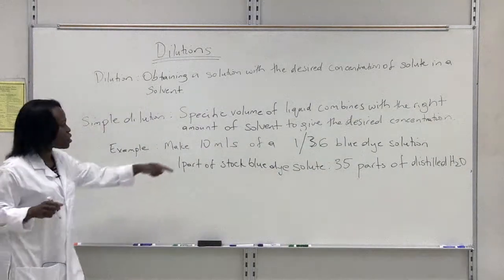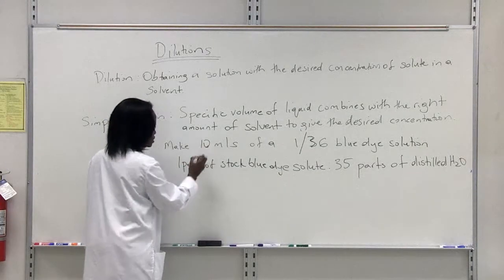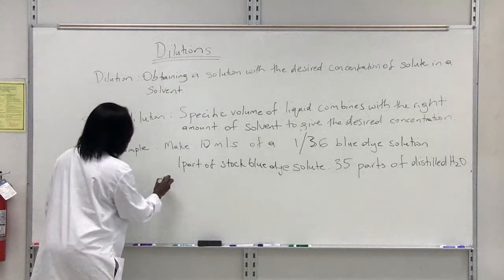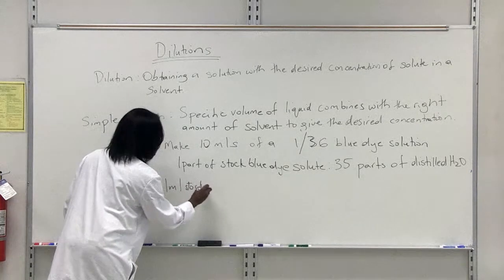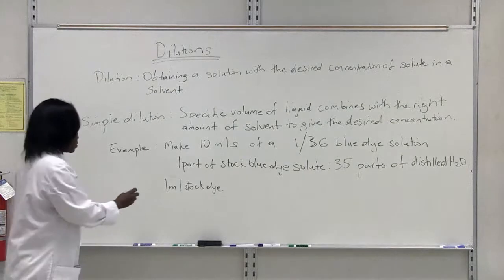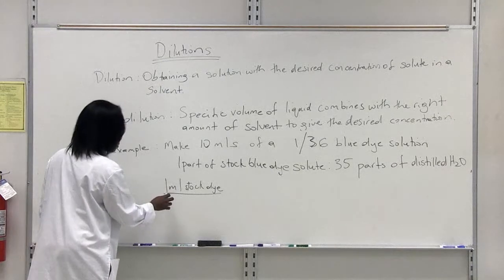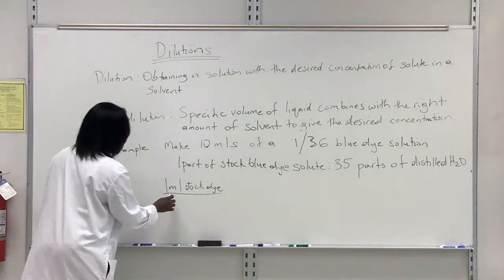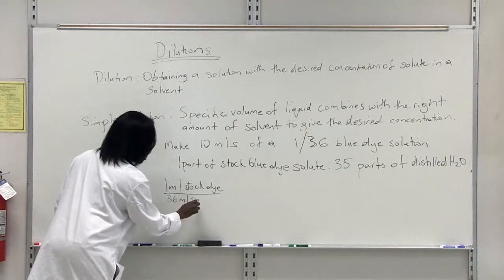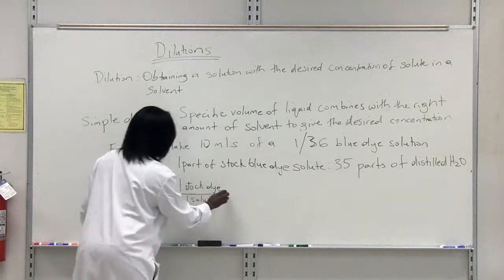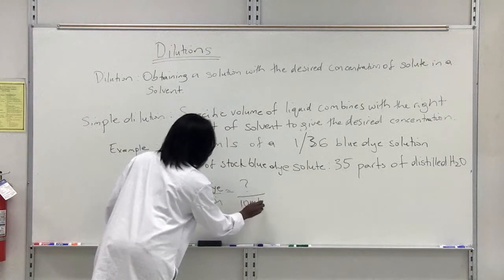I can determine—I just want to make 10 mils of solution though. What I need to determine is, if one mil of stock dye gives me 36 mils of blue dye solution when I dilute it in 35 mils of water, how much dye will I need to make 10 mils of solution?